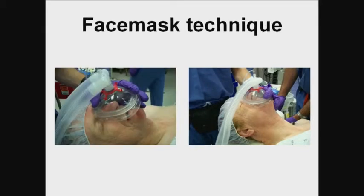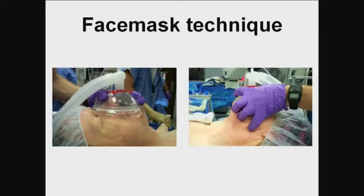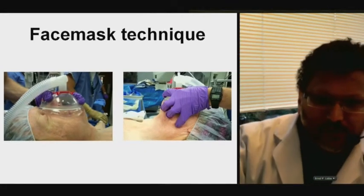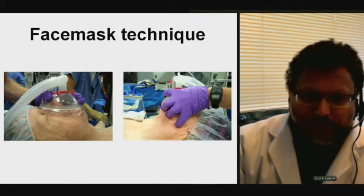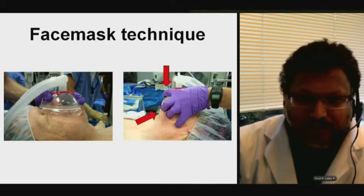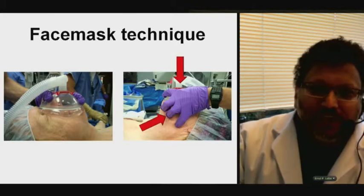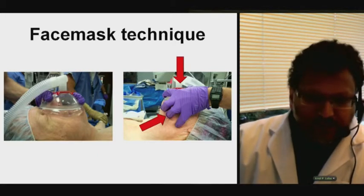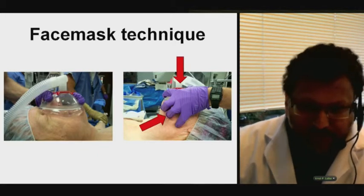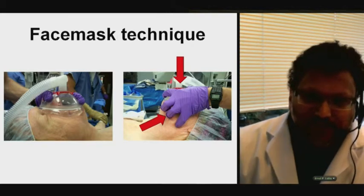This is another view of it, showing the key to successfully mask ventilating a patient. The key pressure is applied at the top of the mask with your thumb and index finger, and with your three fingers at the bottom. You need a tight seal so that your reservoir bag — which you use to ventilate the patient — fills and doesn't stay empty.